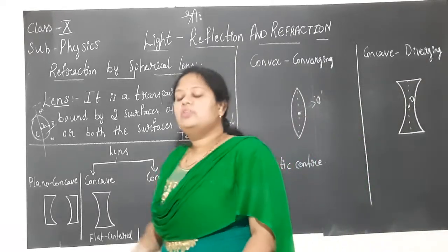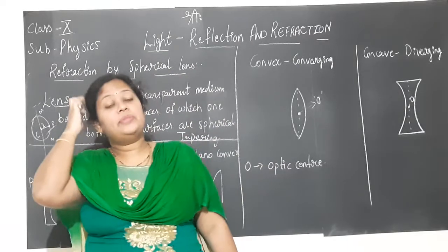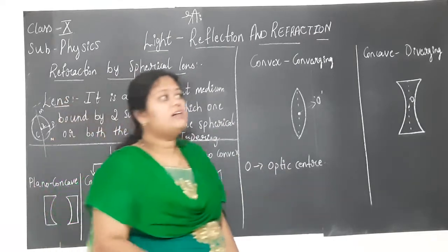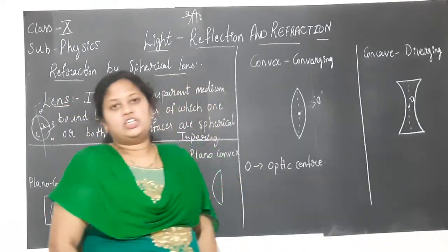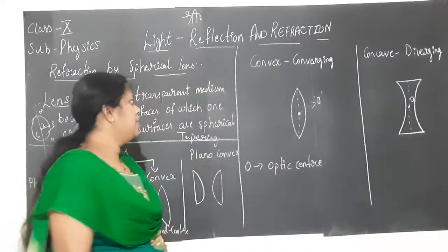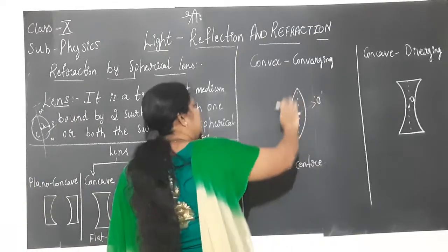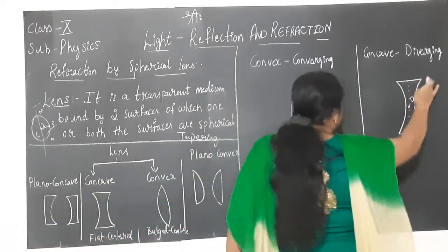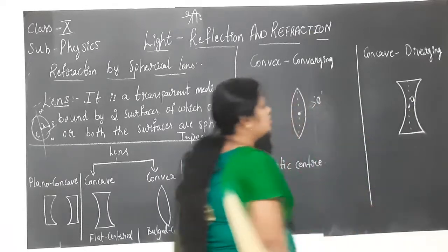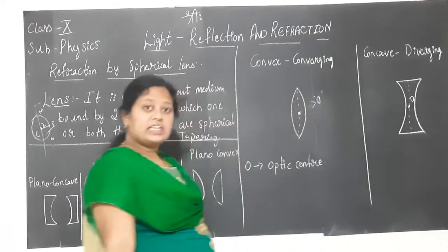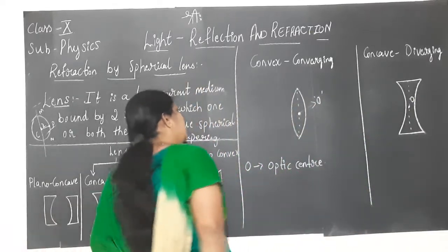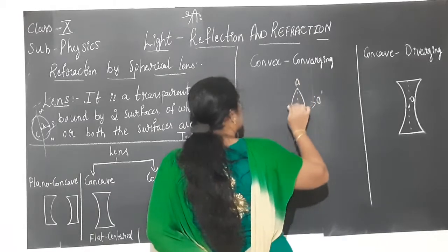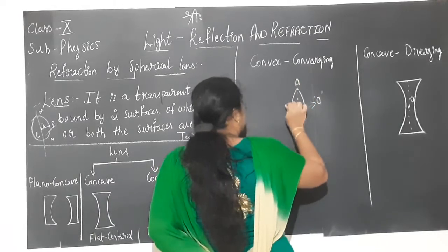The aperture — what was the aperture? The surface area available for the process of reflection was called aperture. In a lens, we have the surface area which is available for the process of refraction — that is again called the aperture.